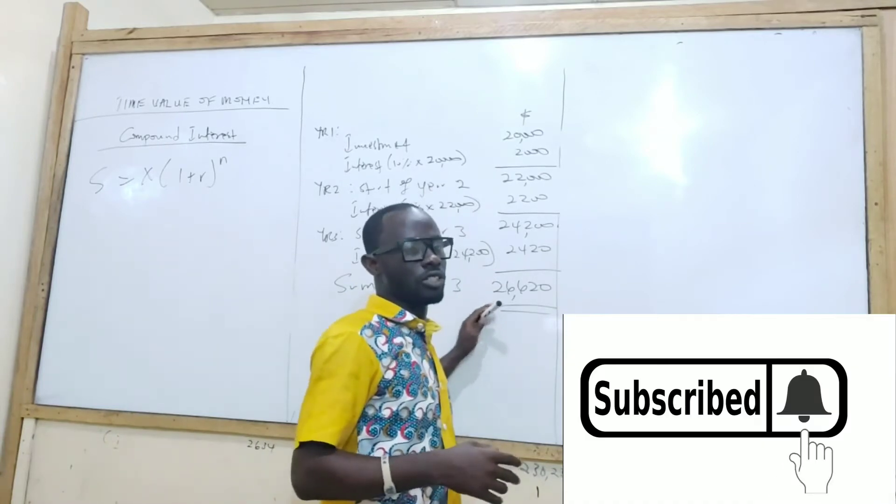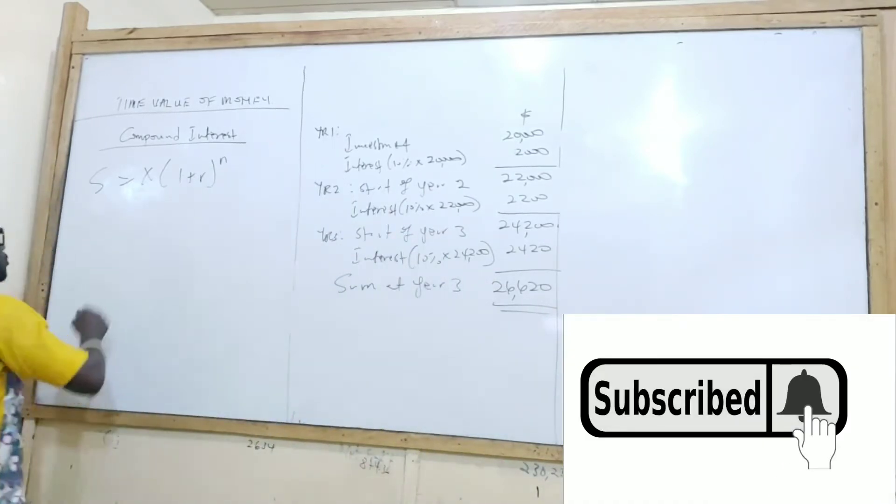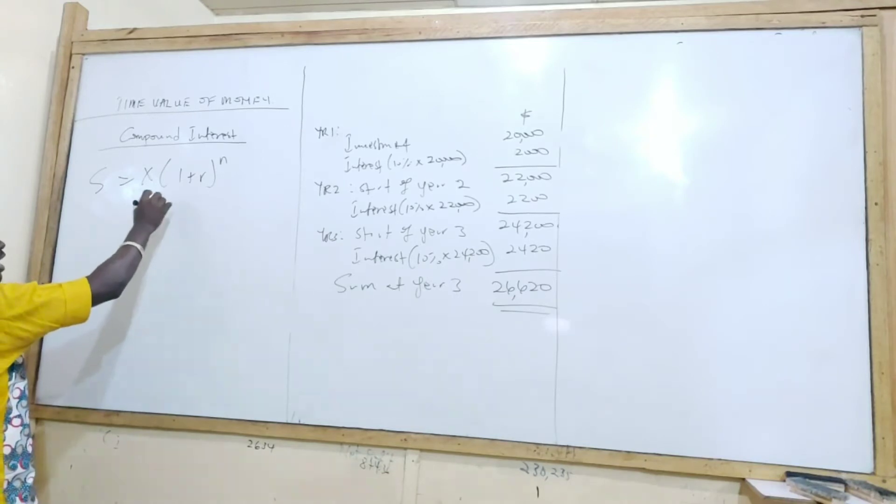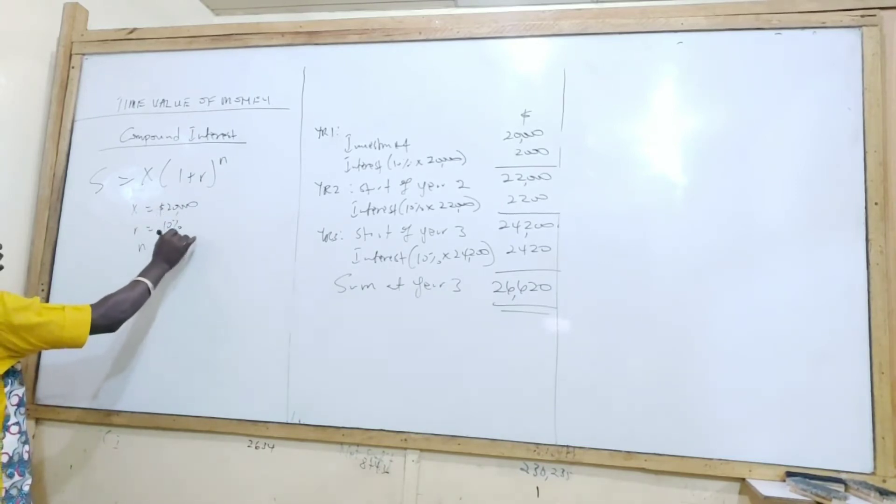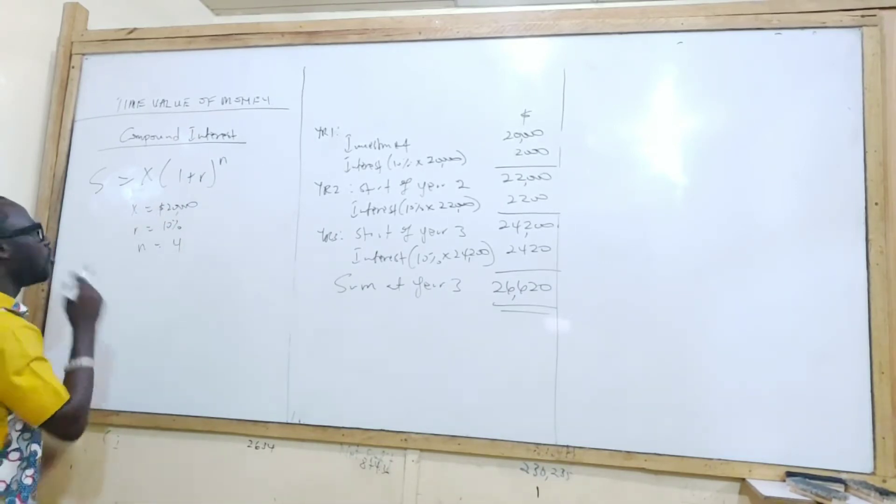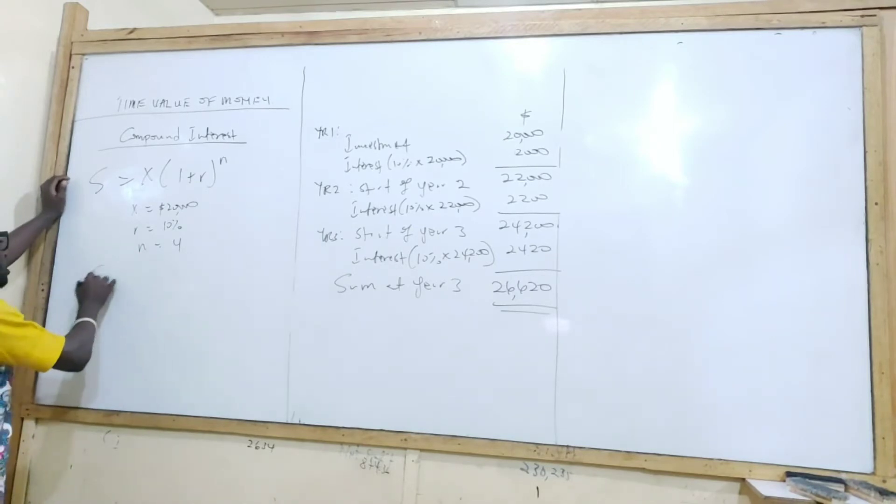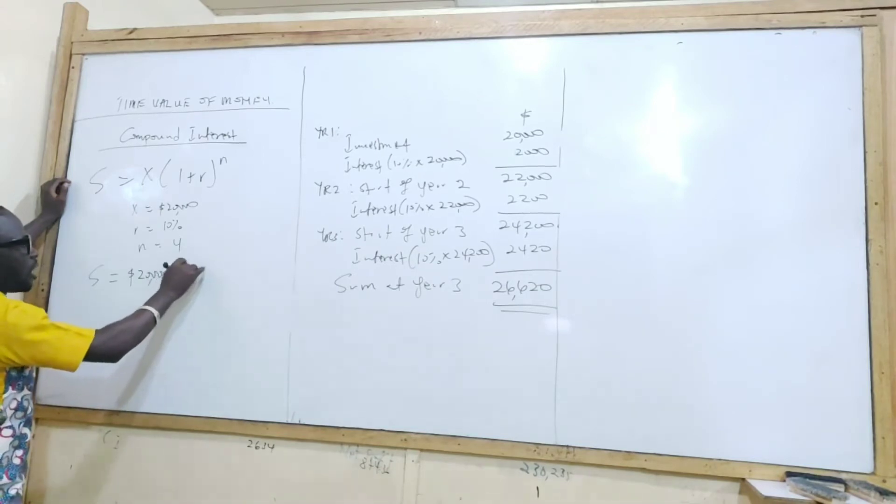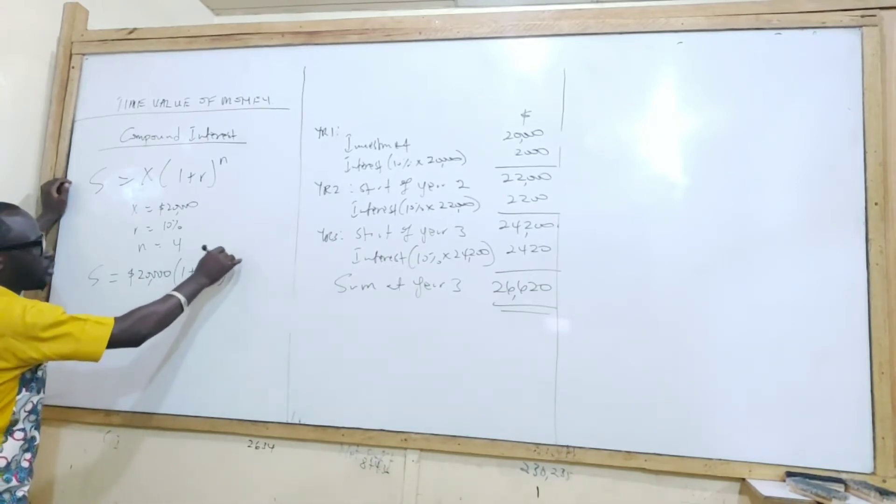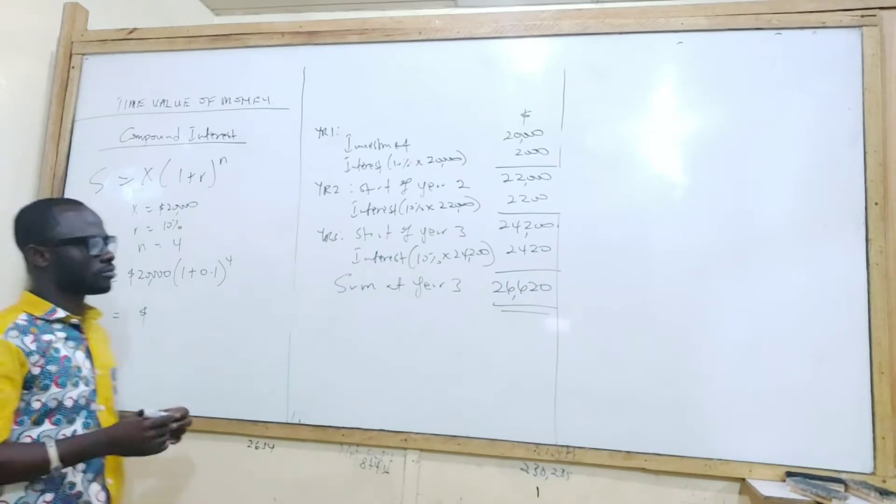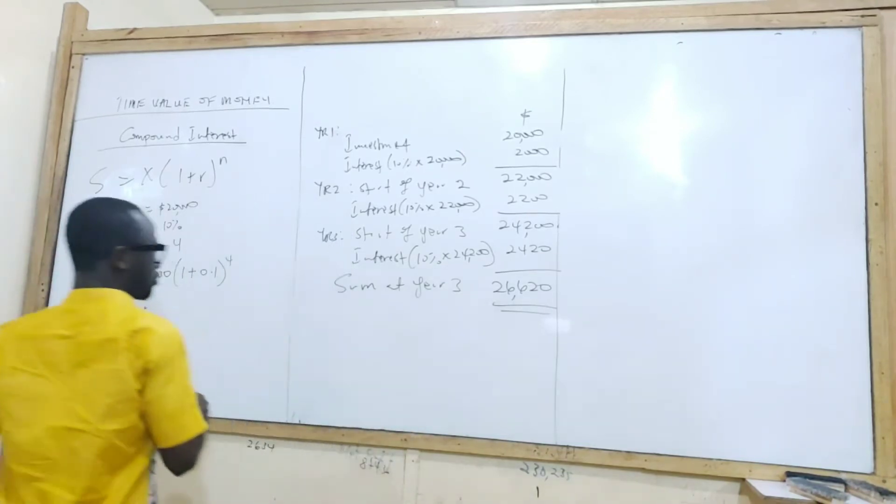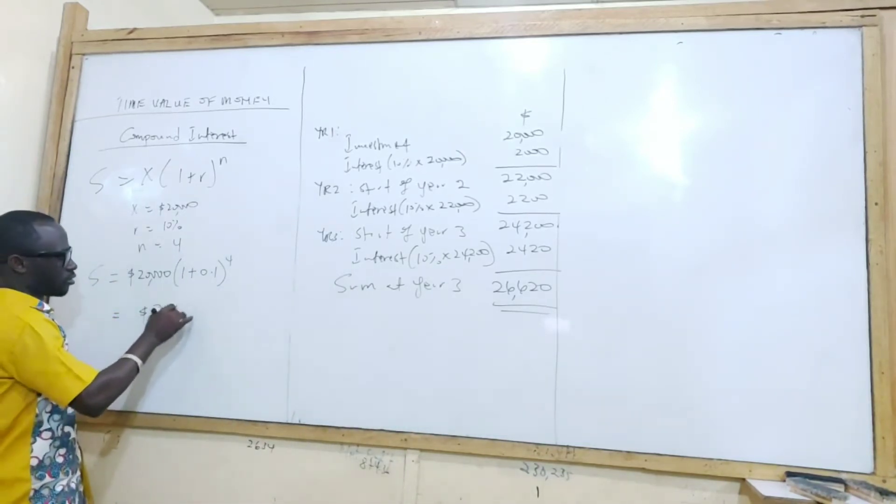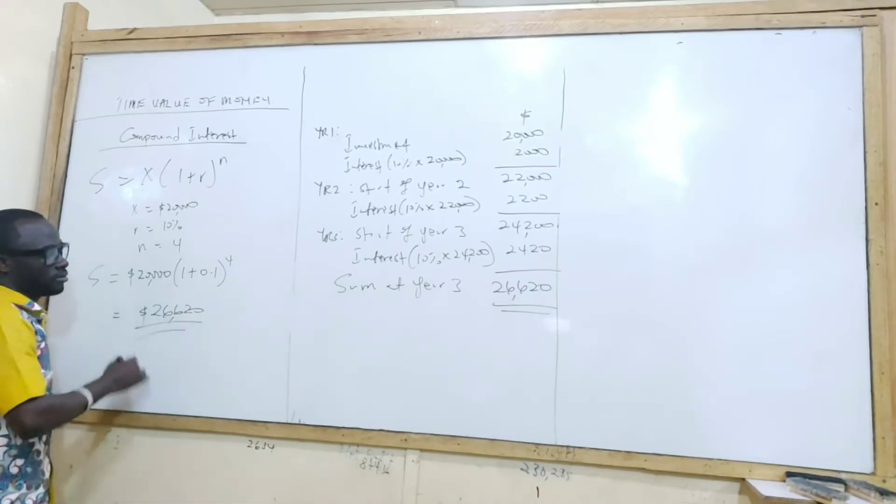This is the traditional approach. So if we are using the formula, what do we do? Our principal is $20,000. Our rate is 10%. The number of period here is what? Four. So we substitute it. That is equal to $20,000 times (1 + 0.1)^4. What do you have? $26,620. That's it.